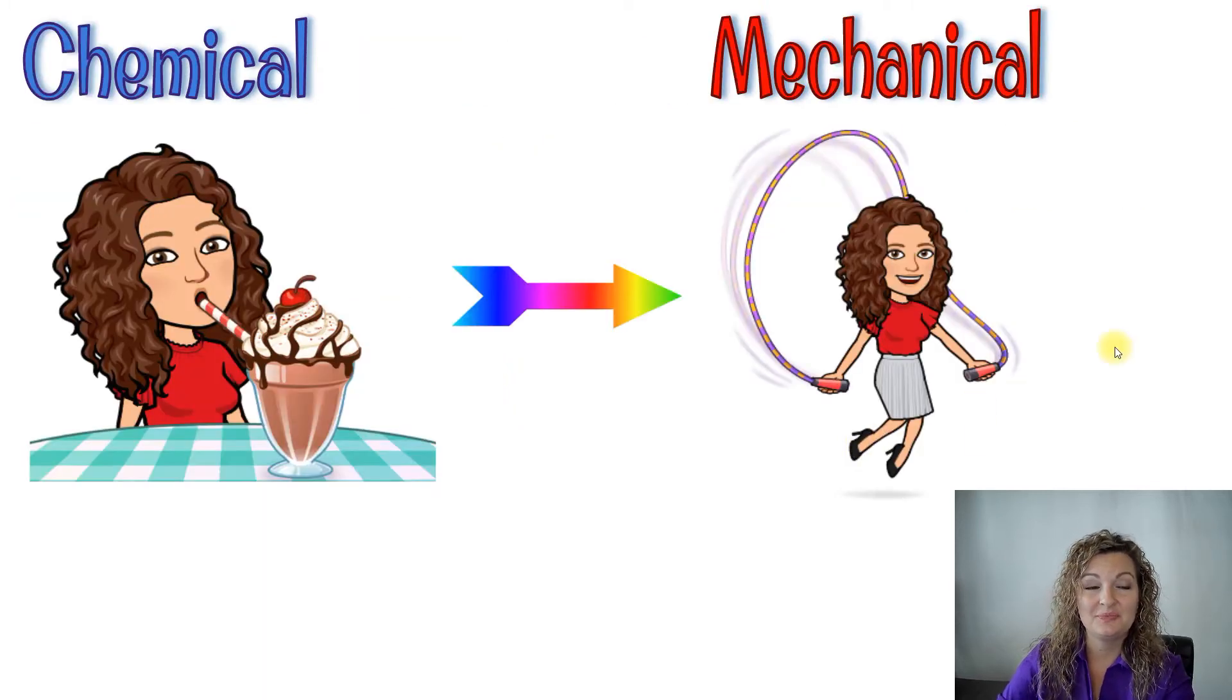Let's look at some examples together. Our first example is chemical to mechanical energy. We have me drinking a milkshake. This milkshake is chemical energy for my body. Once that has been drank, I can turn that chemical energy into mechanical energy.